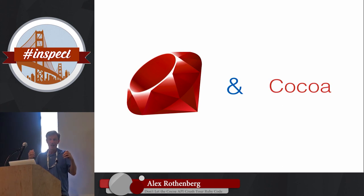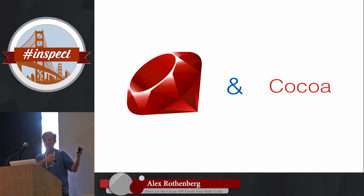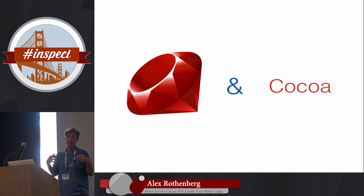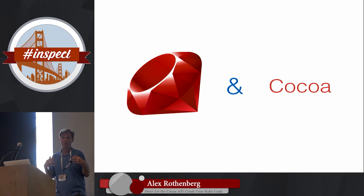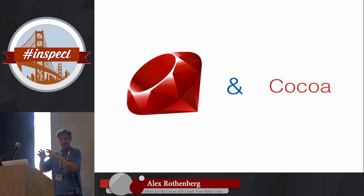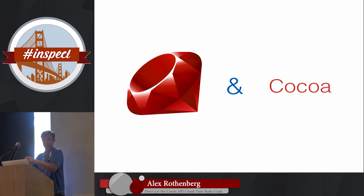By doing these couple of things, now when I'm writing the code, it feels much more like I am writing a Ruby application that happens to use Cocoa. We're remembering what it is that we care about with Ruby and the quality of code we're writing. Doing that means not letting Cocoa dominate our applications — putting Cocoa in its place, which is helping us write the applications we want and doing the things it does super well.